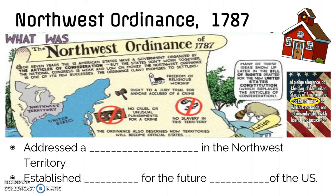I'm going to talk about these five precedents, or provisions, or laws — all of those words mean the same thing. First, this territory in the Northwest Ordinance would not be colonized, meaning this territory would become states. It would become a part of the United States of America; it would not remain separate from the United States of America.